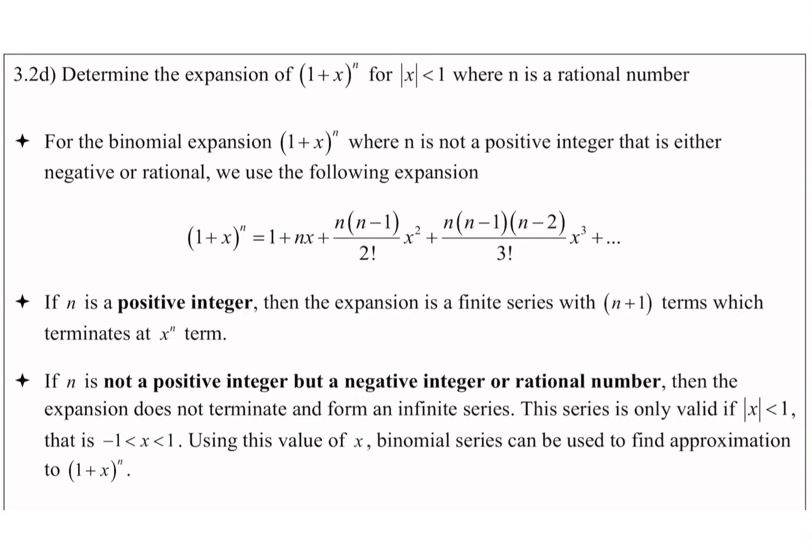Let's continue our lesson, 3.2d. Determine the expansion of (1 + x)^n for |x| < 1, where n is a rational number. For the binomial expansion (1 + x)^n where n is not a positive integer — that is, either negative or rational — we use the following expansion: (1 + x)^n = 1 + nx + n(n−1)/2! · x² + n(n−1)(n−2)/3! · x³ + ...